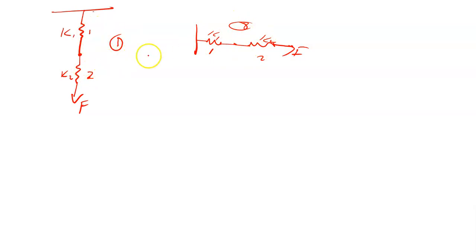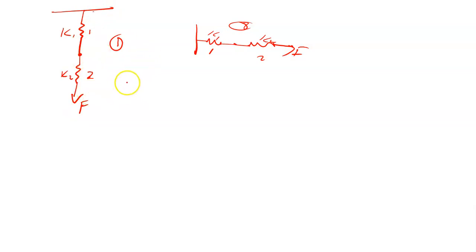What you have to know about the series connection of springs is that the force exerted is experienced by both springs. Spring 2 experiences that force, and spring 1 also experiences the same force. The total force — the effective force — is equal to the force on spring 1, which is also equal to the force on spring 2. This is for the series connection.